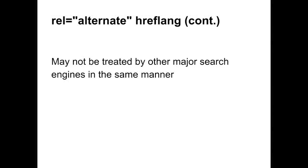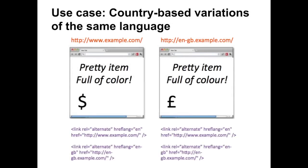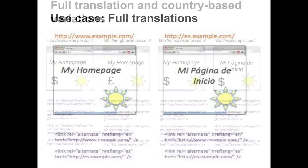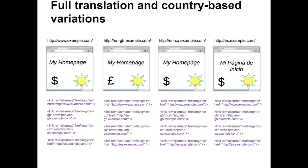Another important detail is that while rel alternate hreflang is supported by Google, it may not be treated by other major search engines in the same manner. In the case of country-based variations of the same language, both corresponding URLs are listed for each page — all variations are specified on each page, not just the alternates excluding the current page. We require listing all alternates because it demonstrates a more bona fide association. For the use case of full translations or full translations with country-based language variations, each page likewise lists all alternates, including itself.